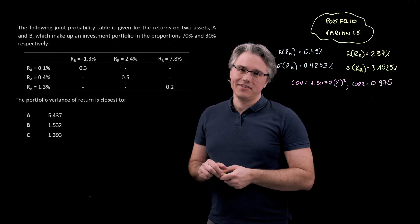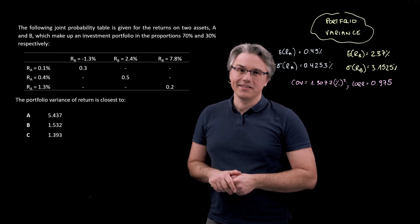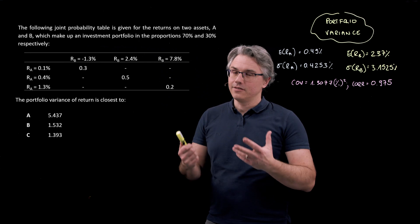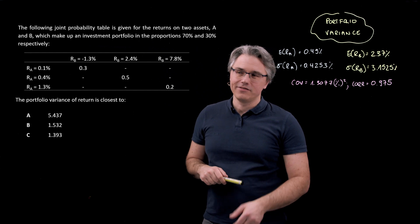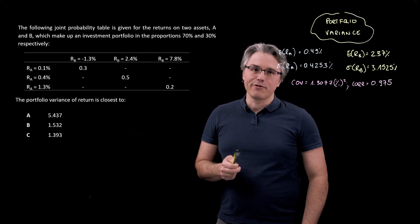This is the same setup that we've seen in previous questions, the same data concerning assets A and B and their behavior in the context of a portfolio where one occupies 70% and the other 30% of that portfolio. This time around, we're asked for the portfolio variance.